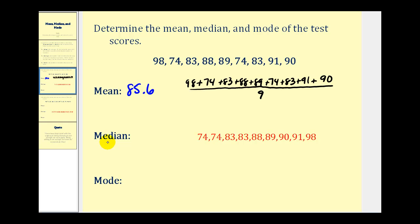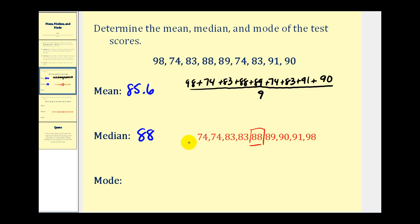Now to find the median, we first have to order the data from least to greatest. I've already done that here in red to save some time. Now that the data is in order, the median will be the number in the middle — where half the values are above and half the values are below. Since there's an odd number of numbers, 88 will be the median, because there are four numbers above 88 and four numbers below 88. So our median is 88, meaning 50 percent of the values are above 88 and 50 percent are below 88.